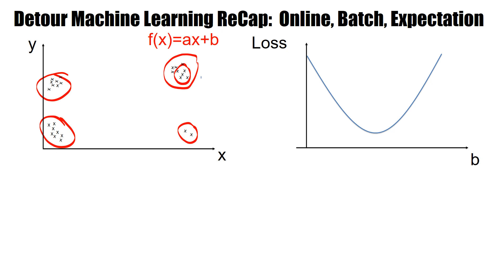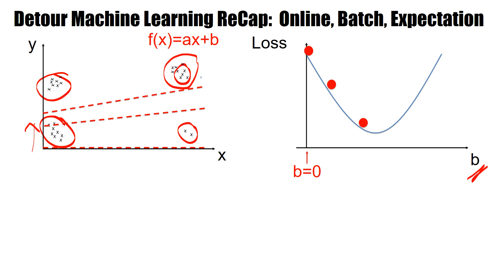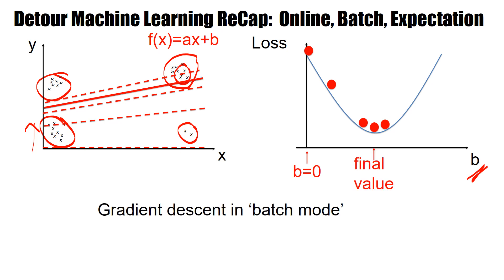If I plot on the loss function the parameter b, starting at b equals zero, then as I do gradient descent the linear function starts to move. b gets larger, moving upwards on the vertical axis, there might be an overshoot, and then we reach the final solution. Doing gradient descent in batch mode, I go down the surface until I reach the minimum, at which point I'm stuck and have found the final value.